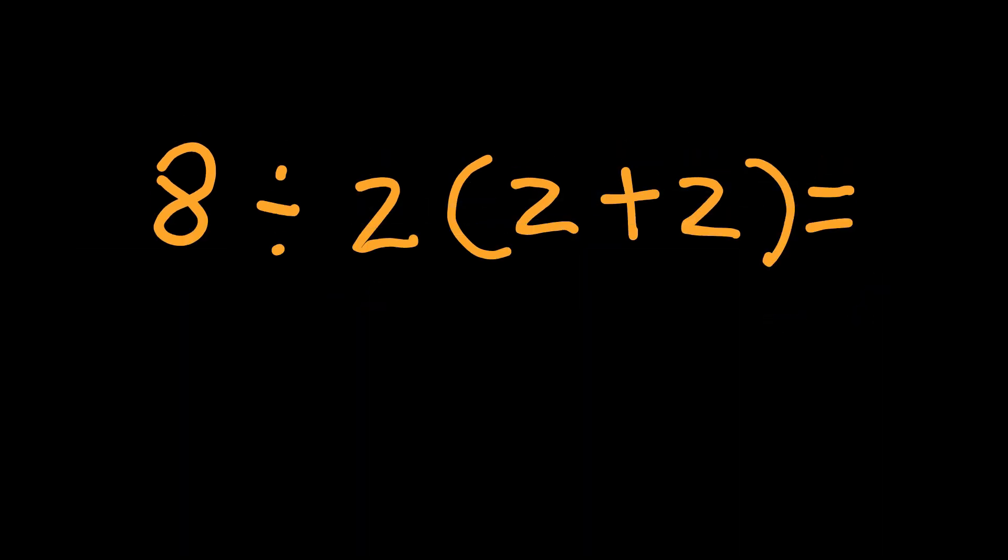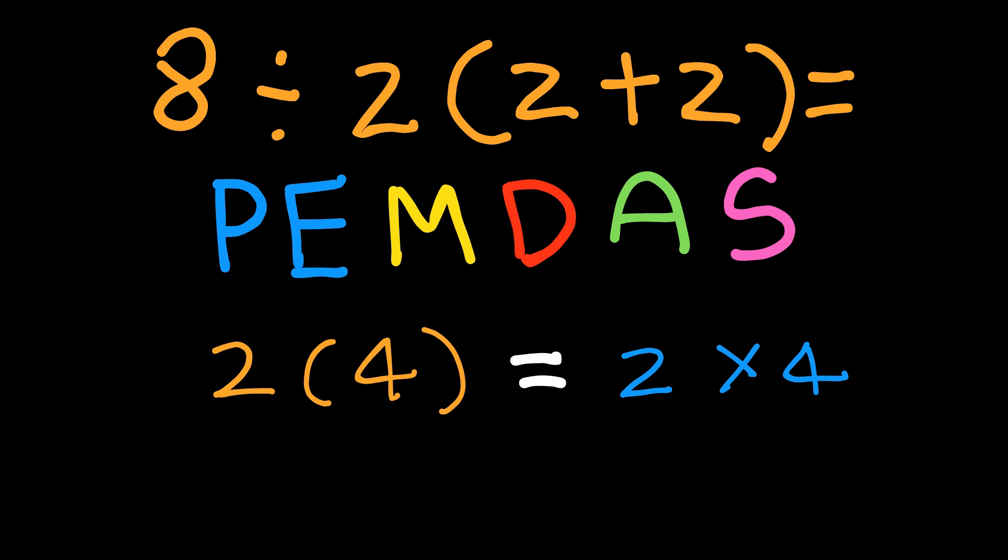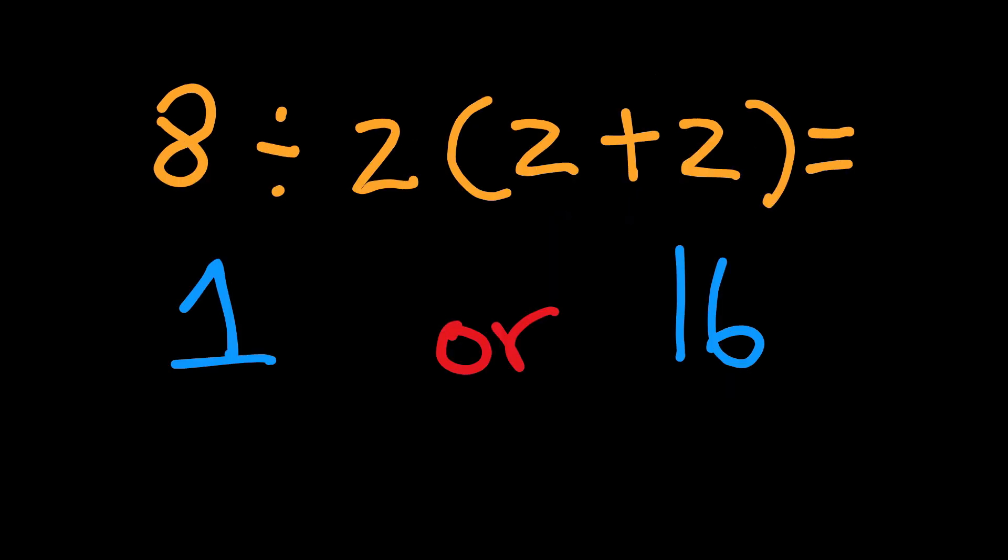Math should be clear. Alright, let's wrap it up. This problem, 8 divided by 2, open parenthesis 2 plus 2, close parenthesis, is not just about solving. It's a lesson in understanding how math really works. PEMDAS is not a strict sequence. It's a hierarchy with left-to-right rules for multiplication, division, addition, subtraction. Be careful with implicit multiplication like 2, open parenthesis, 4, close parenthesis. It's the same as 2 times 4 and it doesn't automatically mean grouping. When in doubt, use extra parenthesis to clarify what you mean. So, what's the final answer? Is it 1 or is it 16?